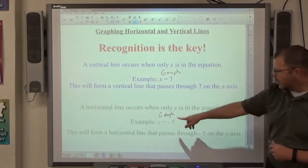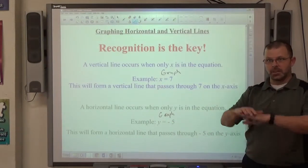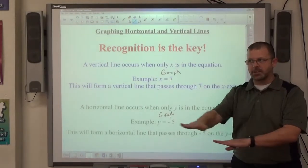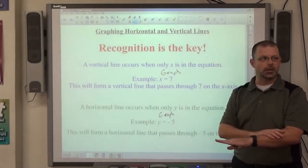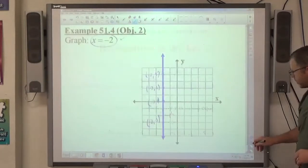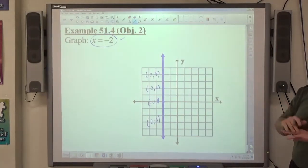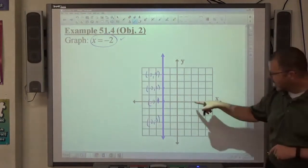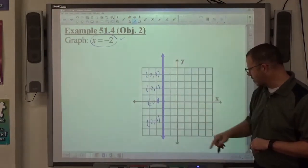Similarly, if y equals a number, now y is stuck. You have to go down 5 spaces, but x can move along freely so you can go horizontally. So x equals only, there's no y, you get a vertical line at the number on the x-axis through that point.